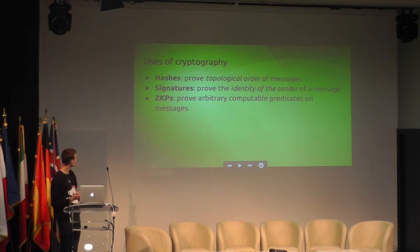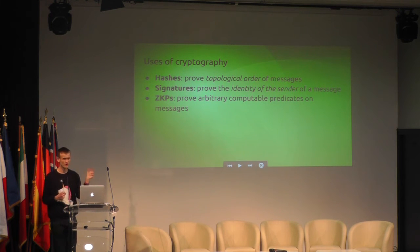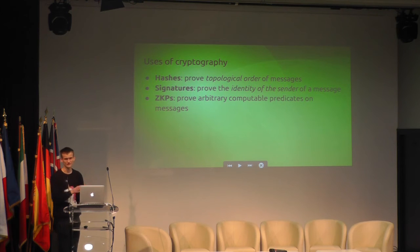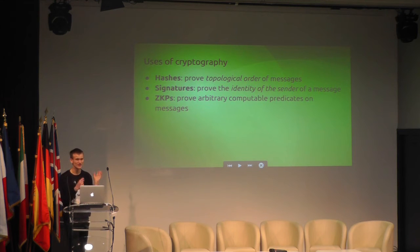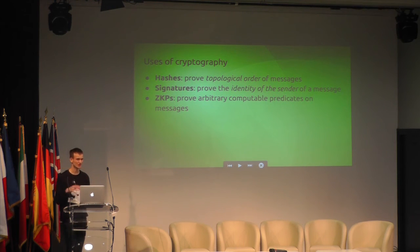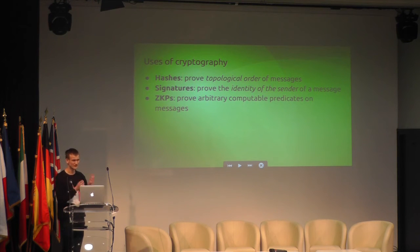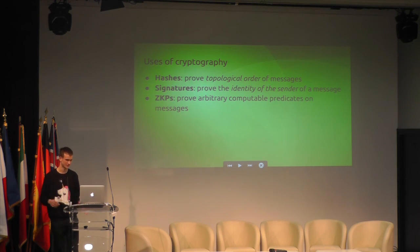Hashes also have the important function that they allow a small piece of data to stand in for a much larger piece of data — if you verify something about the small piece, that allows you to verify a claim about the larger piece. Signatures are about verifying the authenticity of the sender. Zero-knowledge proofs basically prove arbitrary computable predicates on messages — if you have some private or public piece of data and want to prove that some computation on that data leads to some output, the proof can be efficiently verified and people can be convinced that you know a number that, when sent through a computational process, produces some output.